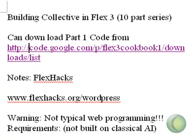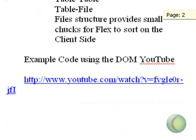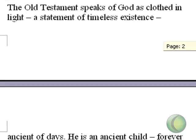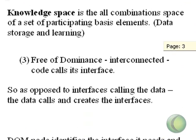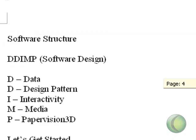There are four elements. I'm going to go through those and discuss them in some detail, and then we're going to start building this site. So first of all, the number one thing is that there are four elements to our collective: one, it's free of a MySQL database; two, it is cyber-aware; three, it must be free of dominance, interconnected, and the code calls its interface; and four, it's going to have a heartbeat, and this really buys us a lot. So let's go back and discuss each one of these elements and then start coding.